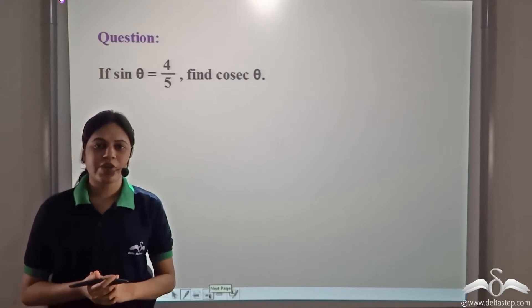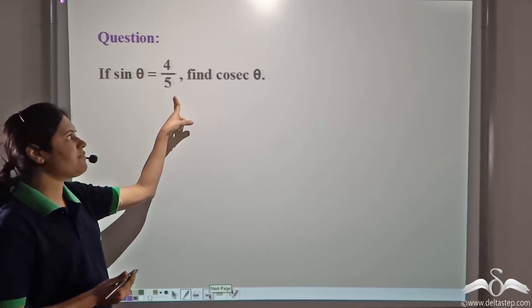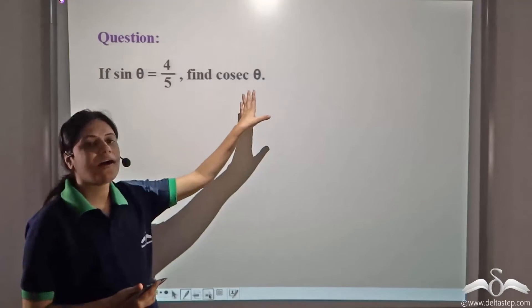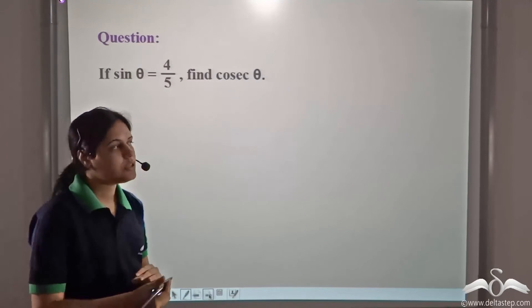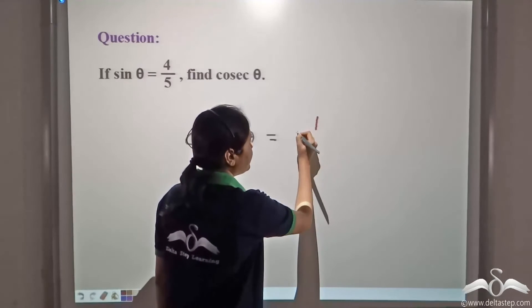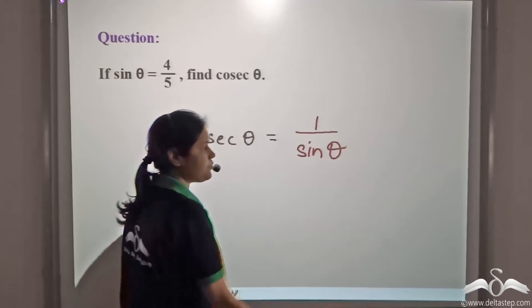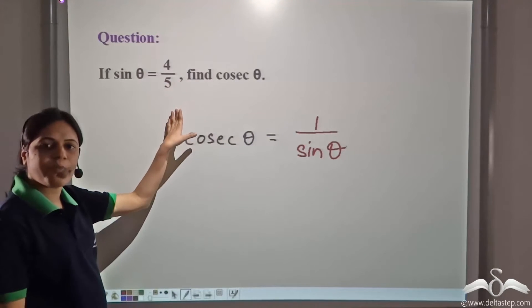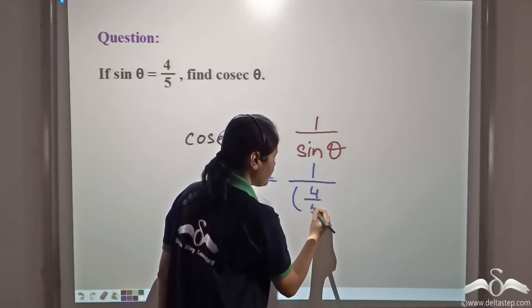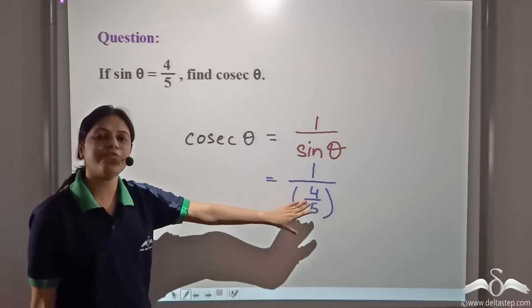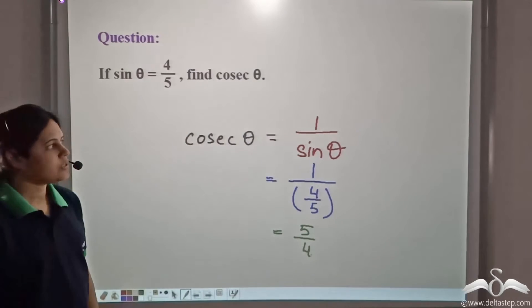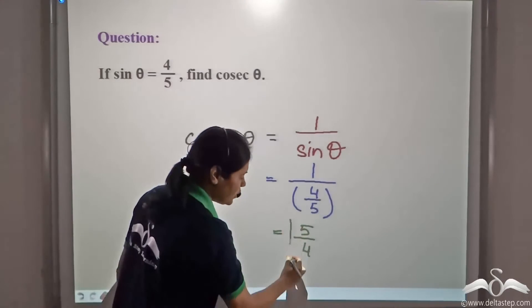Can you answer this question? If sin θ is equal to four by five, find cosec θ. Well, we know that sin θ and cosec θ are reciprocal of each other. So, cosec θ is equal to one divided by sin θ. We are given the value of sin θ as four by five. So, this is equal to one divided by four by five, and one divided by four by five is equal to five by four. So, the value of cosec θ is equal to five by four.